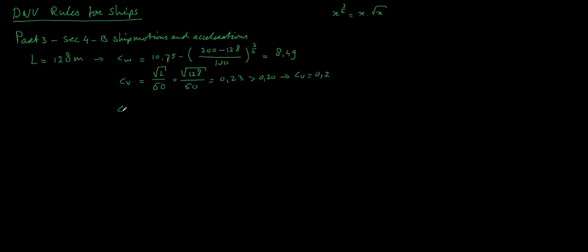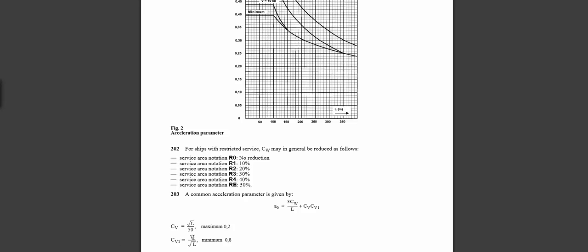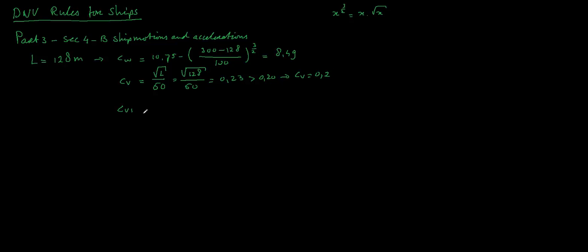Then we have Cv1, and that equals the speed divided by the square root of the length, with a minimum of 0.8. So that is the speed divided by the square root of the length.